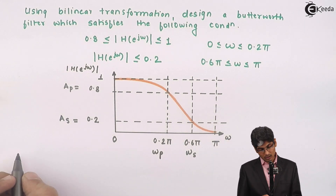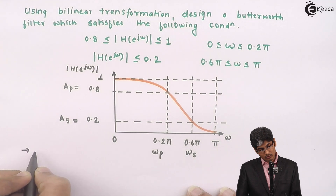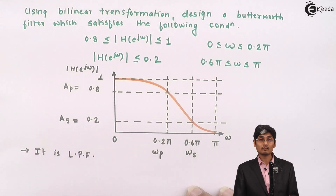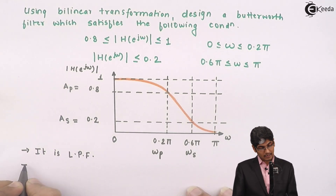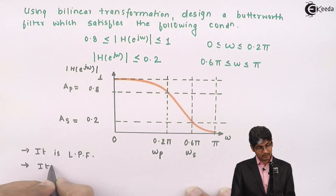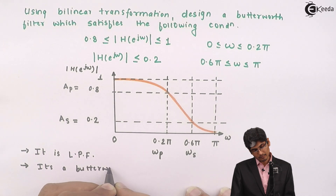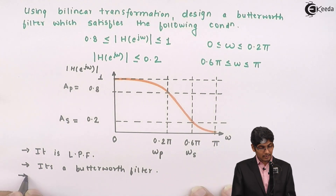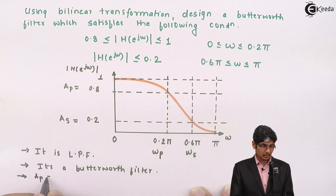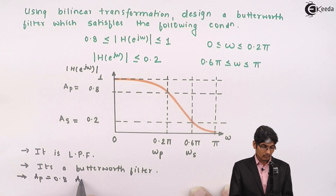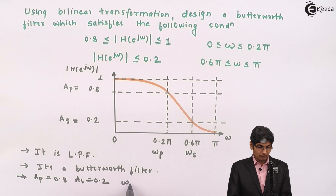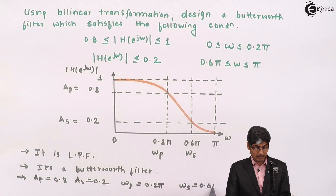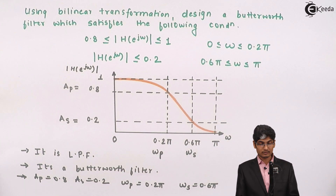From the visualization I can draw several conclusions. First, it is a digital low pass filter. Second, it is a Butterworth filter. The given criteria are: AP = 0.8, AS = 0.2, ωp = 0.2π, and ωs = 0.6π. These are the four values given to us.